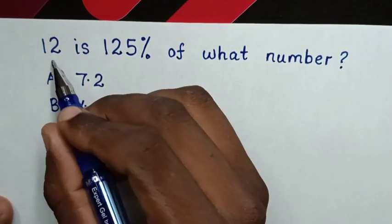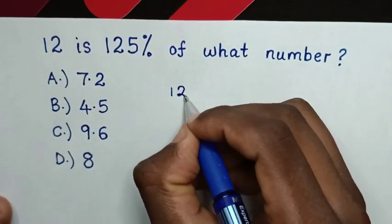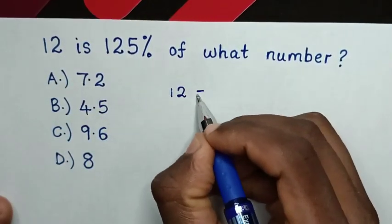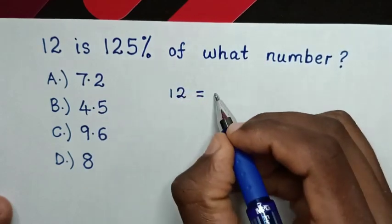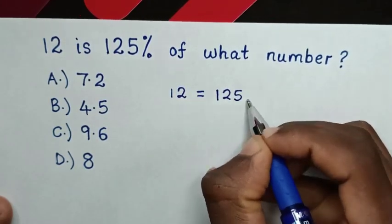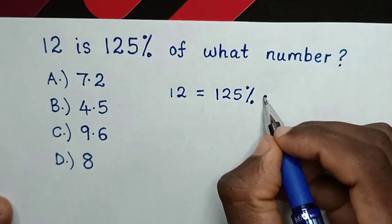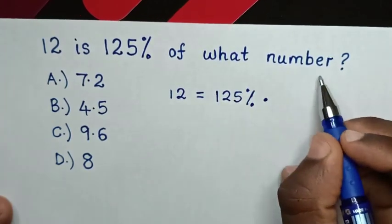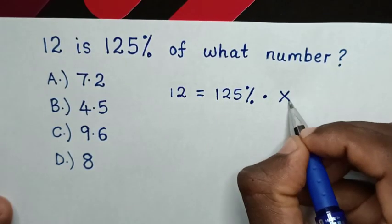So from our problem, 12 is—it means equal—then 125% of—it means times—what number? That number, we let it as x.